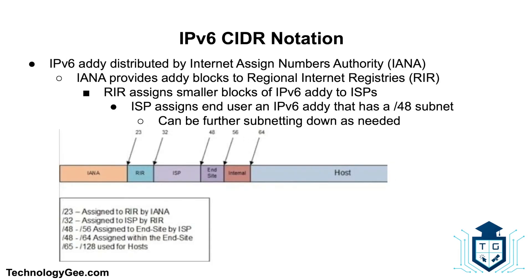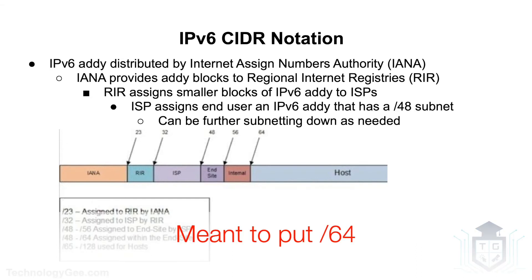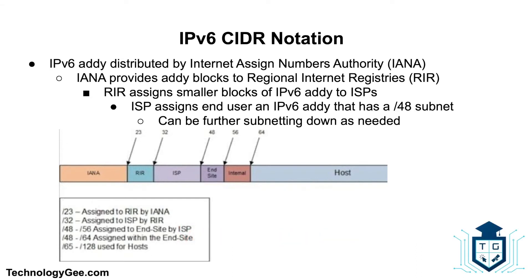Now let's talk about IPv6 CIDR notation. An IPv6 address is usually distributed by the Internet Assigned Numbers Authority, or IANA. The IANA provides address blocks to Regional Internet Registries, who assign smaller blocks to ISPs. The ISP then assigns the end user an IPv6 address with a slash 48 subnet, which the end user can further subnet as needed.